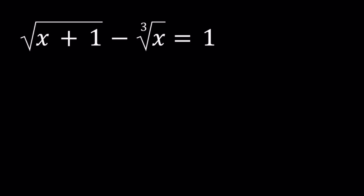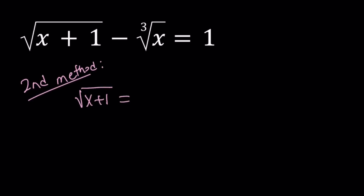Let's start with the second method. So our second method is basically: I'm going to isolate the square root, and that can be written as cube root of x plus 1. And then I'm going to square both sides. So when you square both sides, you get rid of some of the radicals, but not all of them.